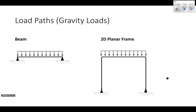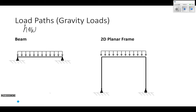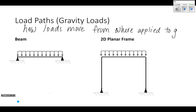Next up is talking about load paths. What I mean by a load path is how loads move from where they're applied to the ground. For example, if I'm on the third floor, how does my weight move through a building to get down to the ground — from the slab to the columns and all that.